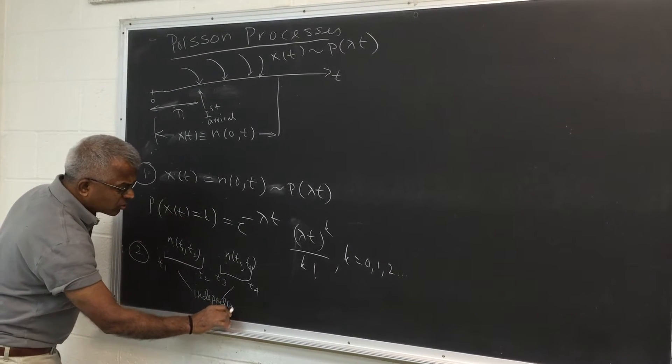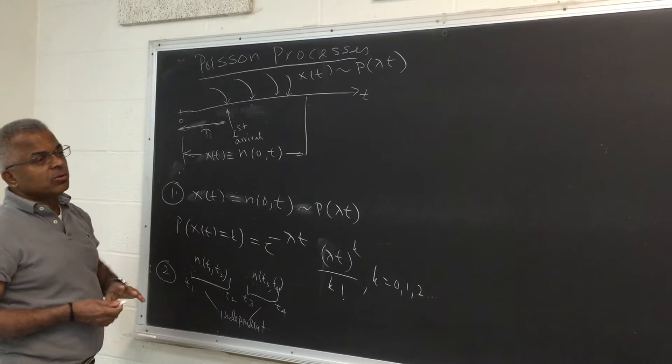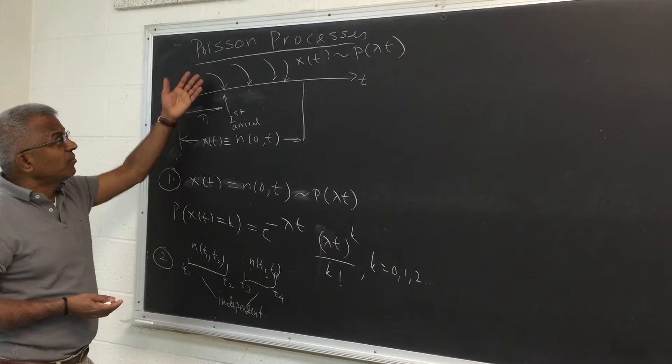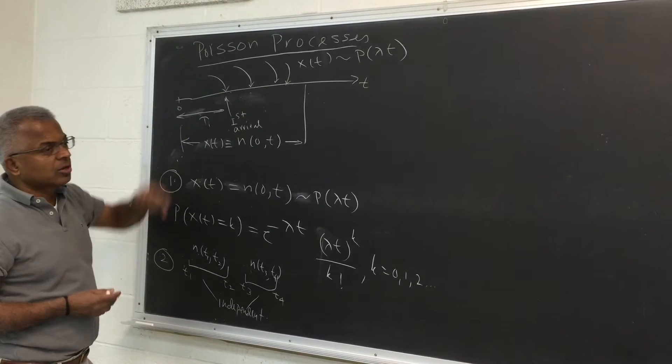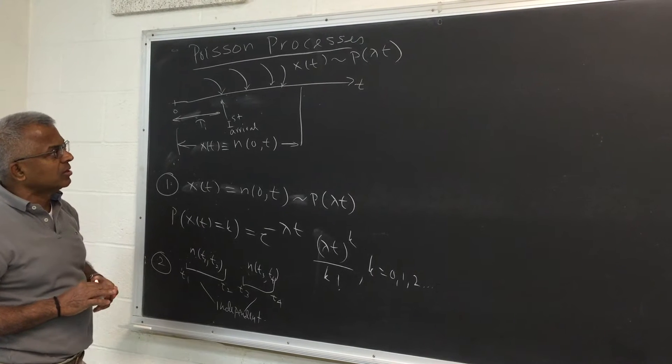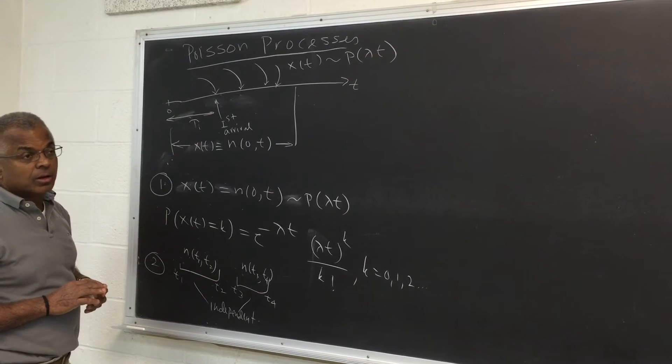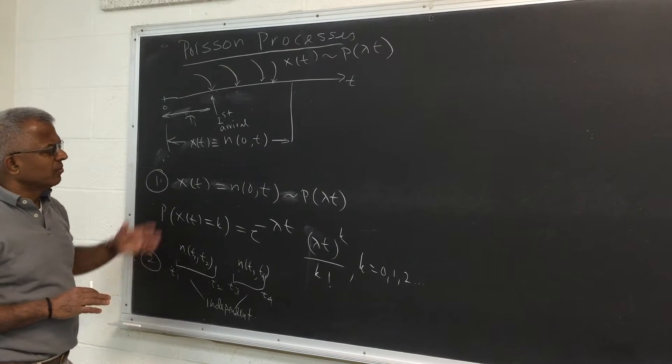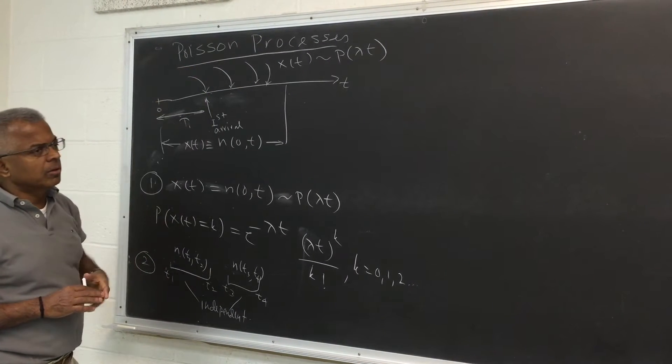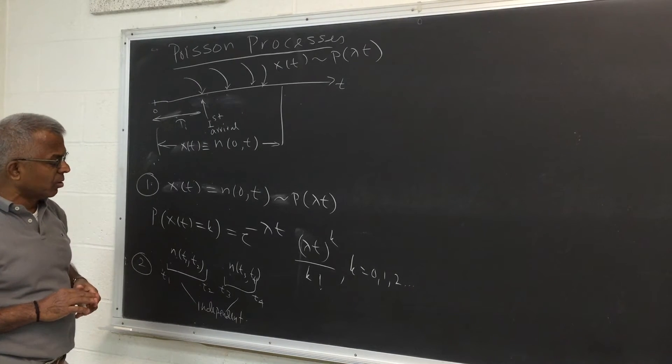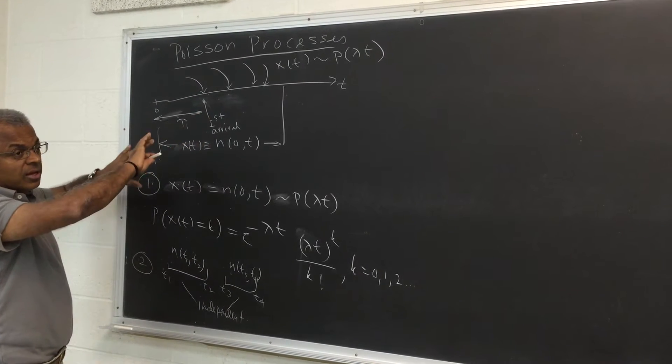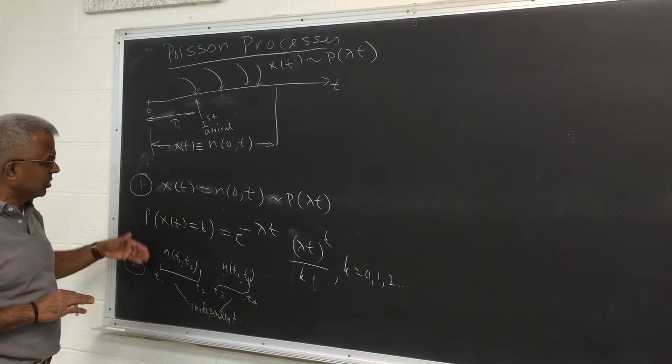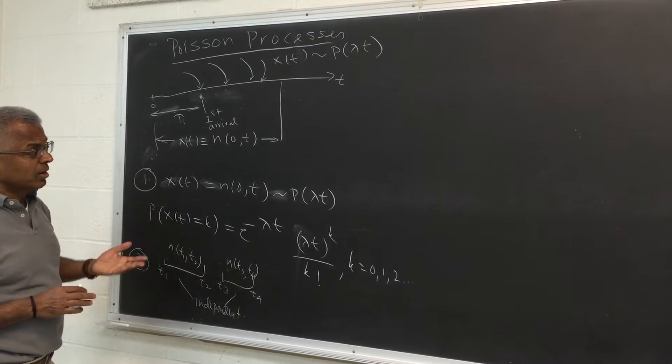So this also you can justify if you consider that the Poisson processes in themselves are some limiting case of binomial random variables where the arrivals are independent Bernoulli. Then you can see that the events over non-overlapping intervals are indeed independent. So these are the two working conditions.